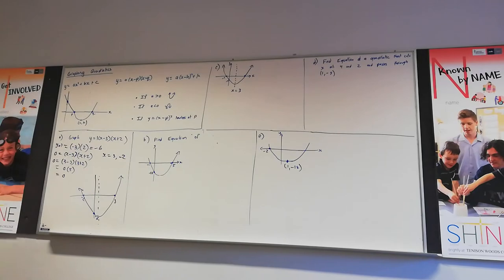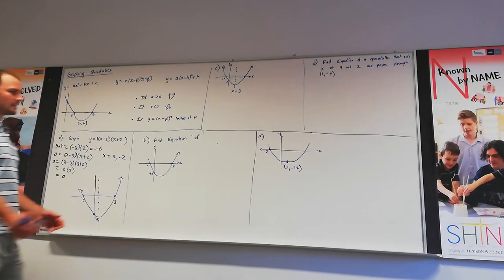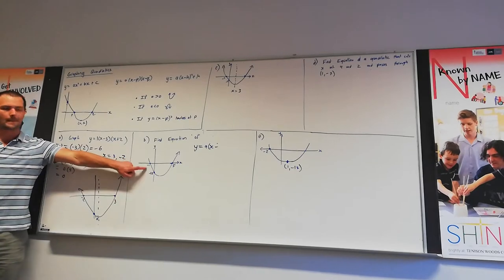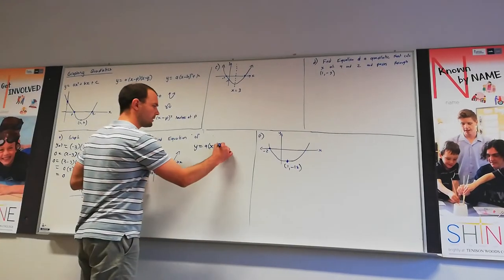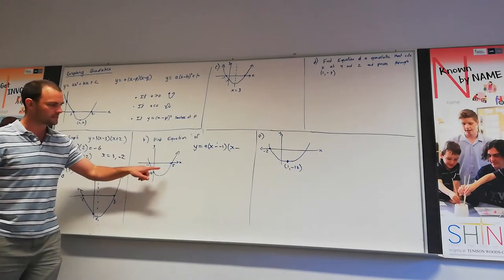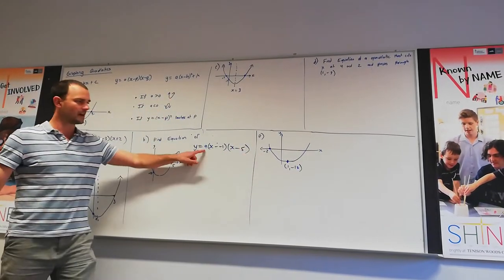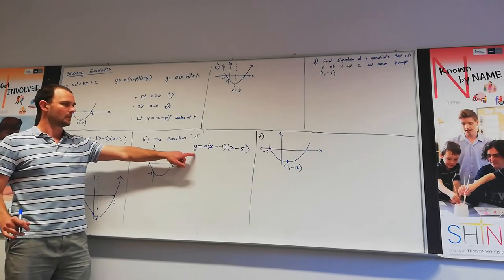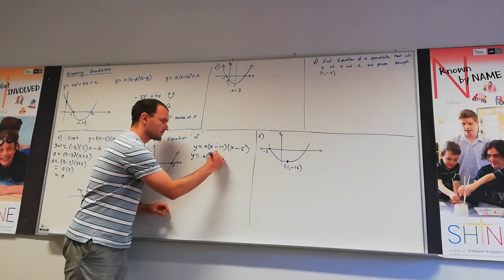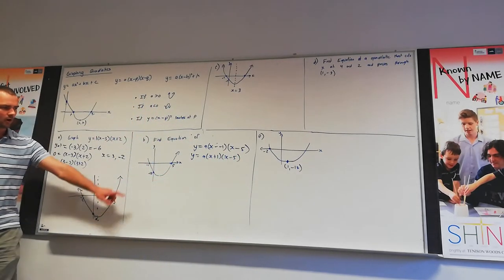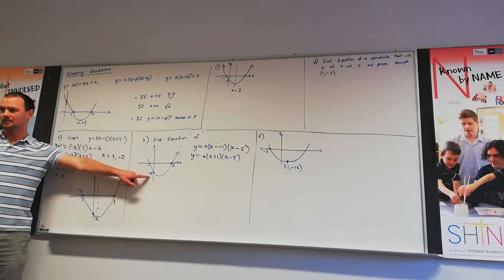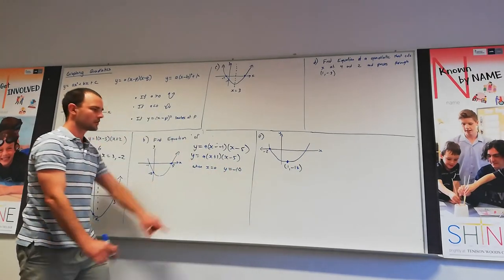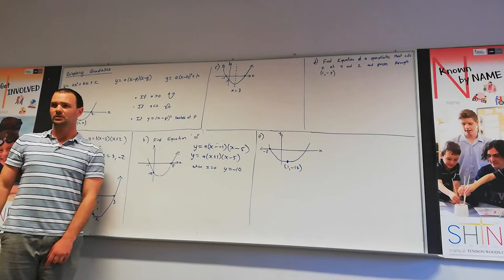Now we do the opposite — we start with a graph and need to find the equation. We start with y = a(x − p)(x − q). The first root is −1, so we have (x − (−1)) = (x + 1), and the second root is 5, so (x − 5). We always start with a because we're not sure whether there's a factor that stretches or dilates it. The y-intercept is −10, so when x = 0, y = −10. We substitute both into the equation and solve for a.